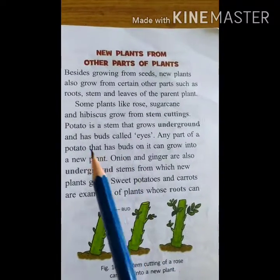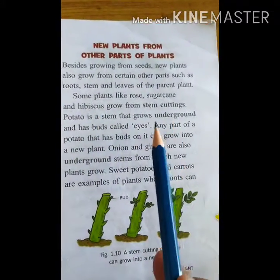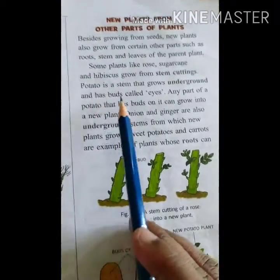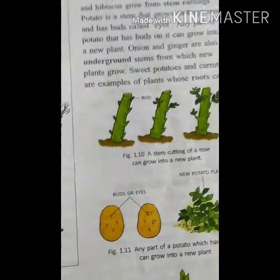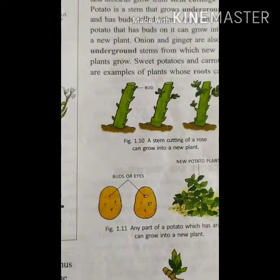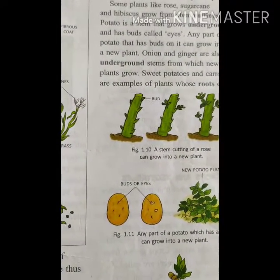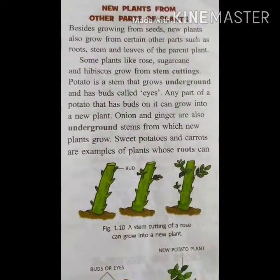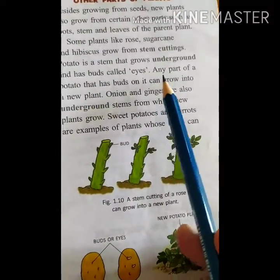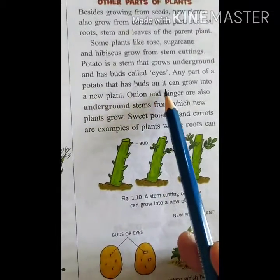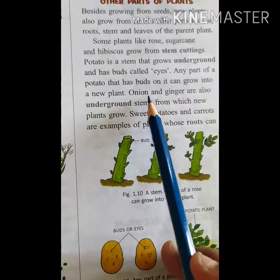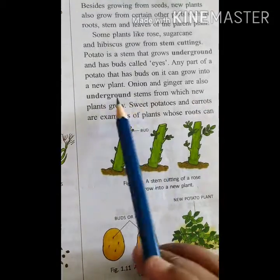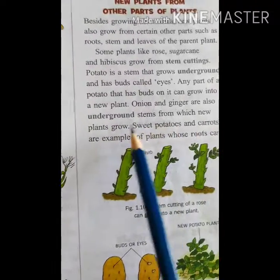The potato is also a stem - it is an underground stem. Potato has small buds called eyes which can grow into a new plant. Any part of a potato that has buds on it can grow into a new plant.